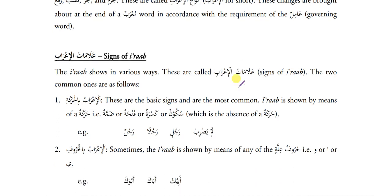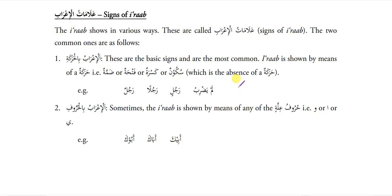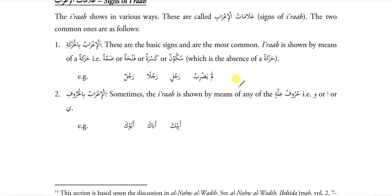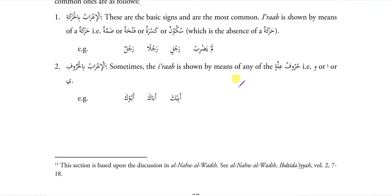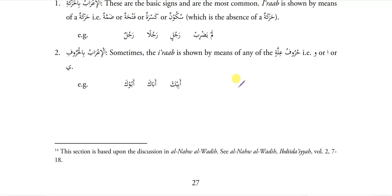Alamatul Arab — the sign of Arab — shows in various ways. The two common ones are Arabul Haruka and Arabul Huroof. Arabul Haruka means Arab shown by Zamma, Fatha, Kasra or Sukoon — these are the most common signs. Like Lam Yazrib has Sukoon, Rajulin has Kasra, Rajulan has Fatha, Rajulun has Zamma. Arabul Huroof means when we use one of the alphabets to represent the Arab — like Abika has Ya, Abaka has Alif, and Abuka has Waw. I will explain these things in the upcoming chapters.